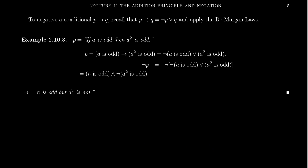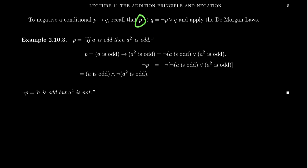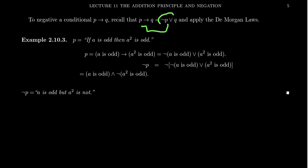Now we've talked about conjunctions and disjunctions. How do you deal with conditionals? To deal with conditionals, it's easiest to recognize that a conditional statement can always be rewritten as a disjunction. We proved previously that 'P implies Q' is logically equivalent to 'not P or Q,' because if the premise is false the statement is vacuously true, and if the conclusion is true the conditional is trivially true. So you can use the DeMorgan laws to negate a conditional by thinking of it as its disjunctive equivalent.